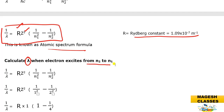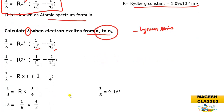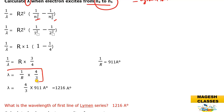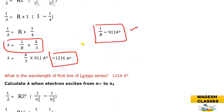When the electron returns from n=2 to n=1, this is called the Lyman series. Substituting into the formula: 1/λ = R × (1/1² − 1/2²) = R × (1 − 1/4) = R × 3/4. So λ = 4/(3R). Since 1/R = 911 Å, we get λ = 1216 Å for the first line of the Lyman series.